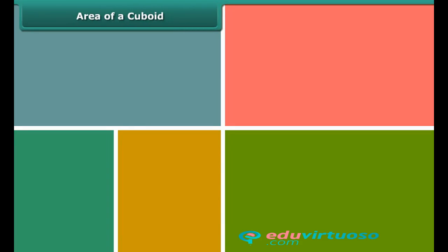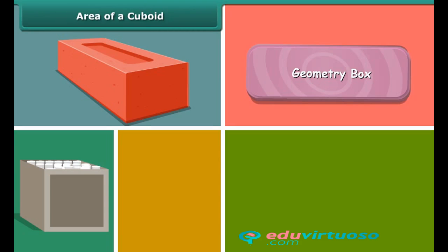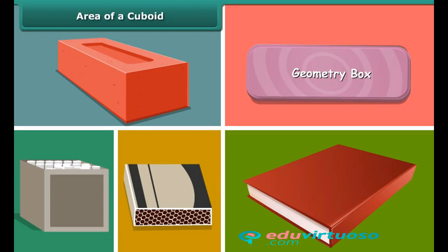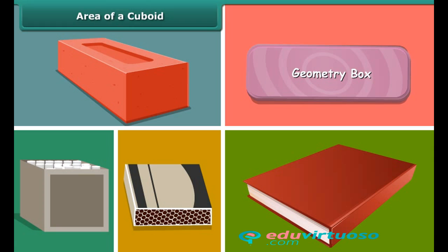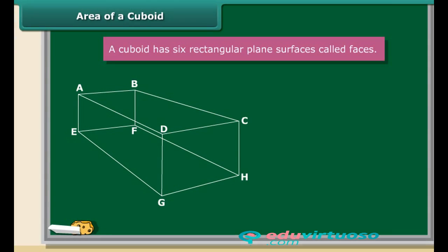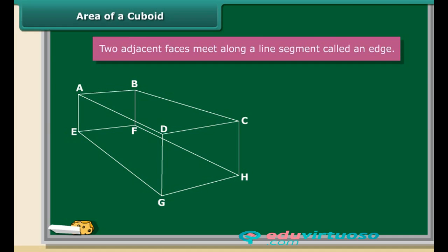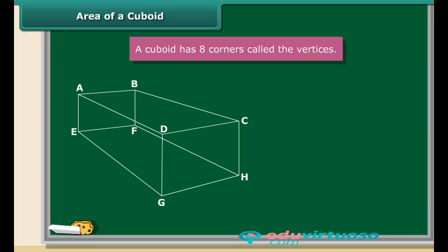Just guess the shape of a brick, chop box, geometrical box, match box and a book. That's right, these are all examples of cuboids. A cuboid has 6 rectangular plane surfaces called faces. Two adjacent faces that meet along a line segment is called an edge. A cuboid has 12 edges in all. A cuboid also has 8 corners called vertices.